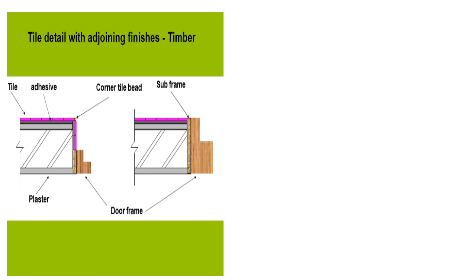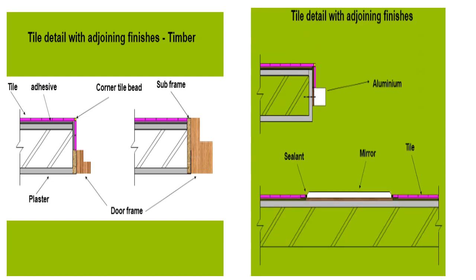The detail with adjoining finishes: when there is a timber finishing coming down, how to fix it — plaster, then adhesive, then the tiles, corner tile bead — how to be fixed, and sub-frames that have to be fixed, everything has been shown in the drawing, which you can easily understand. Similarly, the toilet with adjoining finishes, where aluminium frames are coming down, has been shown in detail — how to fix it out and what precautions have to be taken, as shown in the sketches.